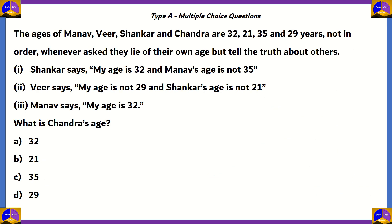Next question. The ages of Manav, Veer, Shankar, and Chandra are 32, 21, 35, and 29 years — not in order. Whenever asked, they lie about their own age but tell the truth about others. Shankar says: my age is 32, and Manav's age is not 35. Veer says: my age is not 29, and Shankar's age is not 21. Manav says: my age is 32. What is Chandra's age?